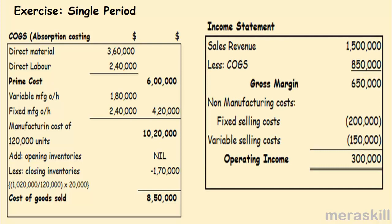What is the income statement now? Sales revenue was 100,000 units into 15, so 1.5 million. Cost of goods sold taken from here. Gross margin 650,000. Then non-manufacturing costs — the fixed selling, variable selling — and you get an operating income of 300,000. This is under absorption costing.